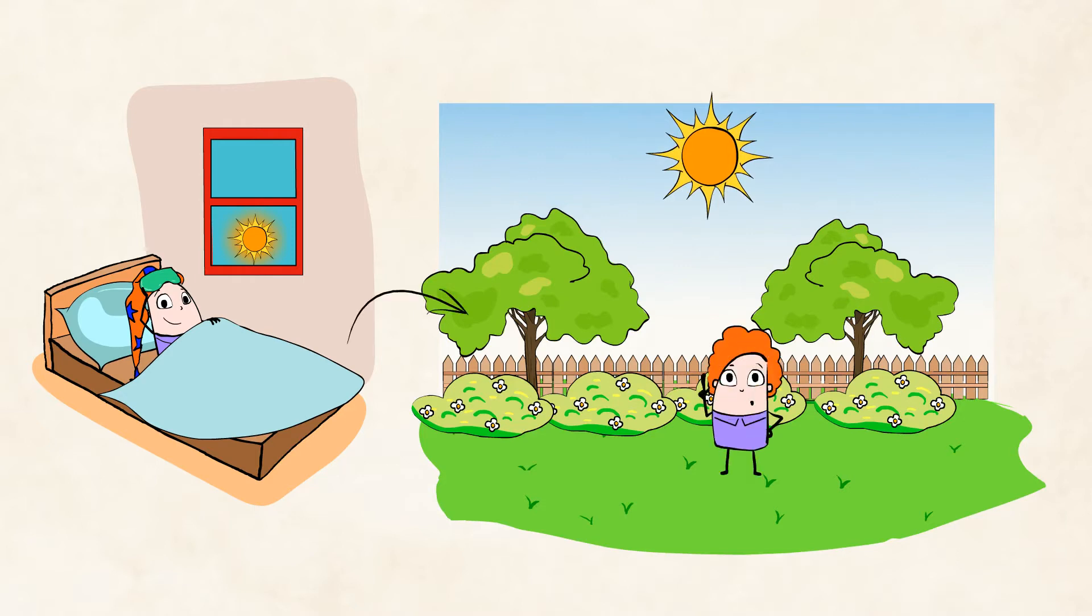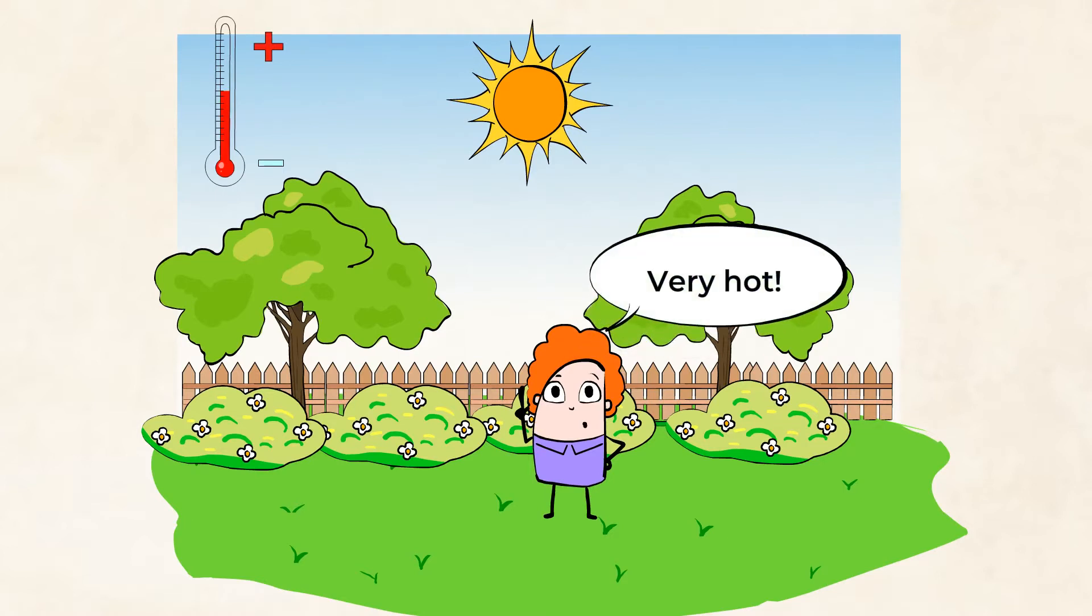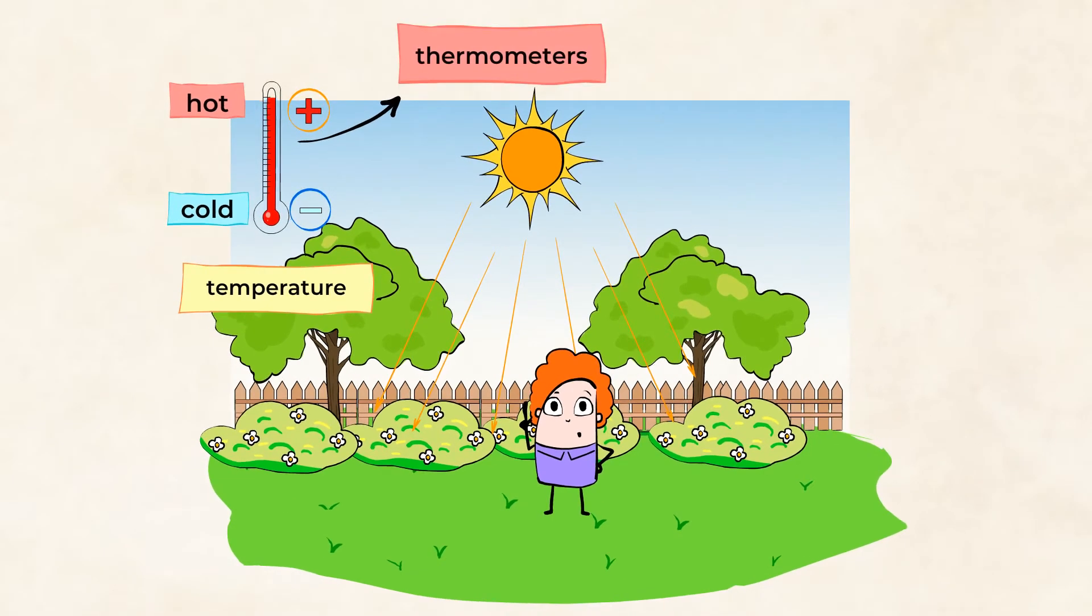If we go outside in the middle of the day, the sun will be right above us. This is actually the hottest part of the day, because the sun is overhead, and its heat energy causes the temperature to rise. Temperature is how hot or cold something is. We use thermometers, like this one here, to measure temperature.